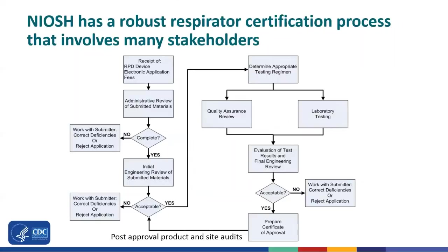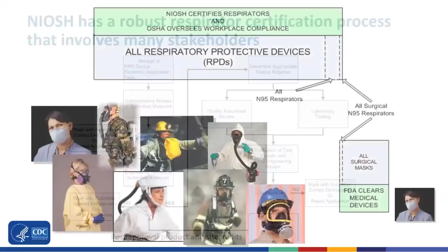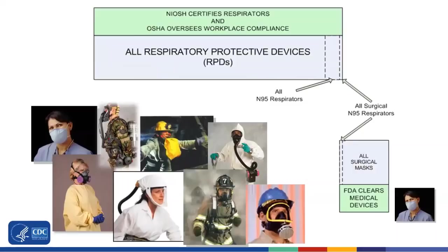NIOSH's respiratory protective device approval program has safeguarded the protection of workers for many years. The respirator approval program activities are comprehensive and include evaluation of the engineering design and quality assurance program, as well as testing the devices and post-market evaluation. Since 1972, NIOSH has approved about 9,000 respirator designs. Typically, the program has approximately 100 manufacturers issued a NIOSH certificate of approval, with approximately 120 manufacturing sites located in 20 countries.